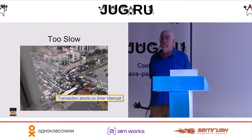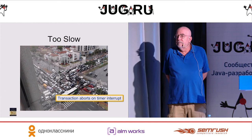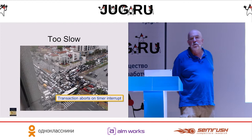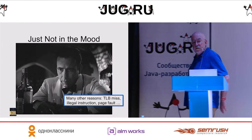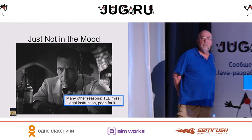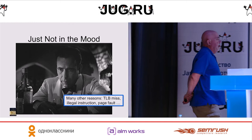Your transaction could abort because it was too slow. If it runs for a long time, then your processor would generate a timer interrupt, and the first thing a timer interrupt handler does is it clears out the cache and aborts your transaction. If this happens once, maybe you should try it again. If it happens every time, maybe your transaction is just too long. There are also lots of situations where Intel, for its own reasons, decides to abort your transaction.